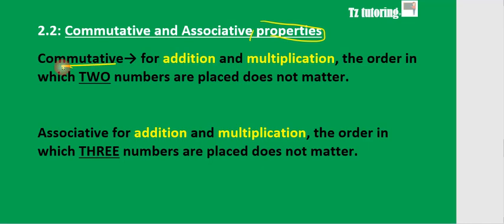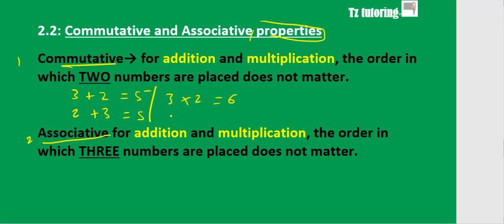There are two key properties: the commutative property and the associative property. The commutative property works only for addition and multiplication, and it says the order in which numbers are placed does not matter. For example, 3 plus 2 gives you 5, and 2 plus 3 also gives you 5. For multiplication: 3 times 2 gives you 6, and 2 times 3 also gives you 6.